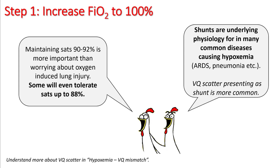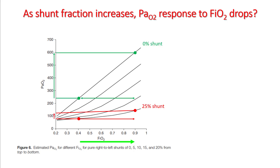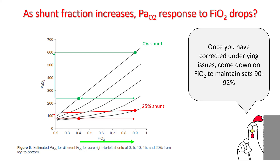Most common diseases such as ARDS and pneumonia cause hypoxemia by shunt physiology. However, VQ scatter is possibly a more common cause than a pure shunt. Even though shunts don't respond very well to oxygen, there is some improvement in PaO2 with increasing FiO2, and this might be sufficient for your patient to linger on while you are treating the underlying condition. Maintain SATs between 90 to 92 percent using appropriate FiO2. SATs lower than 88 percent may result in tissue injury while SATs more than 92 percent may result in undue side effects of high oxygen.